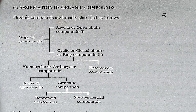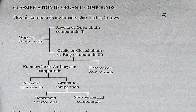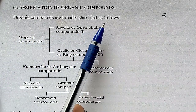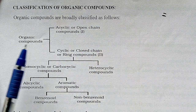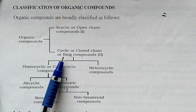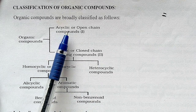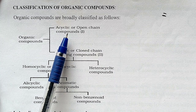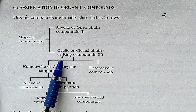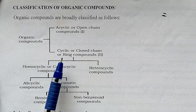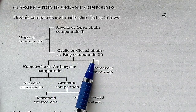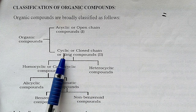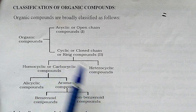Hello friends, in this session we will discuss the classification of organic compounds. Organic compounds are broadly classified as follows. First, these are classified into two main categories: first is acyclic or open chain compounds, where only open chain is present and ring-like structure is not present at all. Second is cyclic or closed chain or ring compounds, where ring-like structure is present.